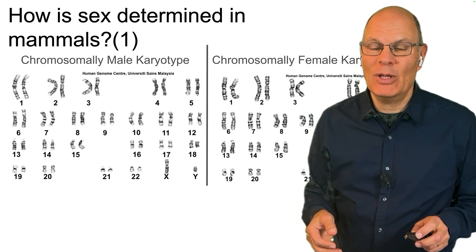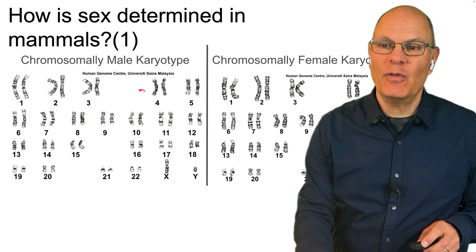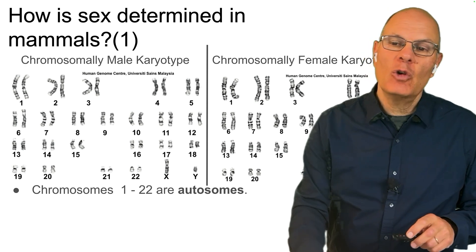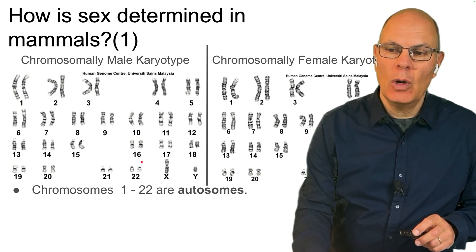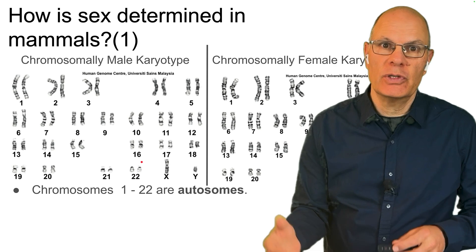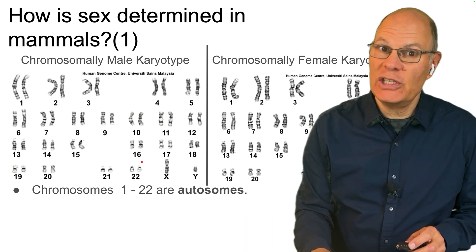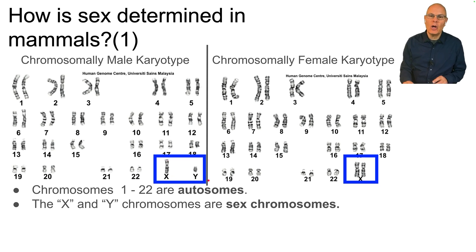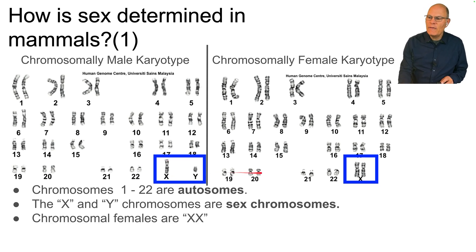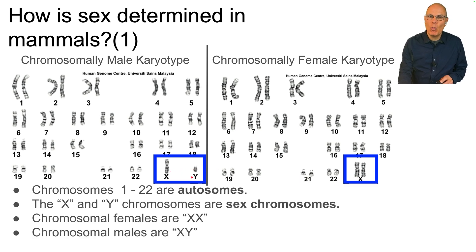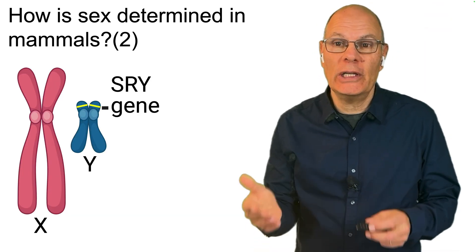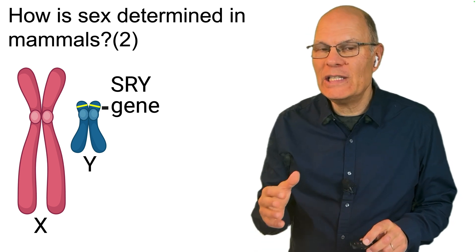How is sex determined in mammals? We've seen this image before — it's a karyotype. It shows all of the homologous pairs paired up. Chromosomes 1 through 22 are called autosomes. They're paired homologous pairs, and they're the same in chromosomal males and chromosomal females. But the last pair are called the sex chromosomes. Females have two X chromosomes. Males have an X chromosome and a Y chromosome. Unlike the autosomes — chromosome pairs 1 through 22 in humans — the X and the Y are quite different from one another.